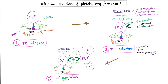What are the steps of platelet plug formation? First, platelet adhesion; then platelet activation; then platelet aggregation. During the test of platelet aggregometry, you're trying to test for platelet aggregation. How do we induce the platelets to aggregate together? Add an agonist — such as ADP, epinephrine, collagen, ristocetin, or arachidonic acid.